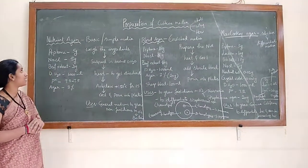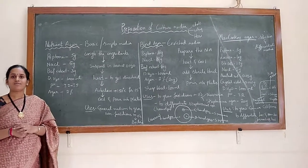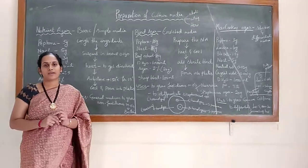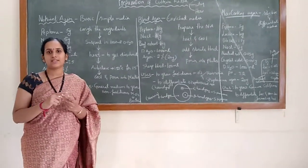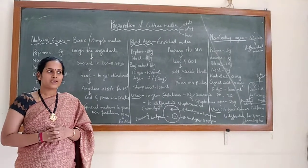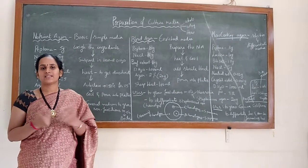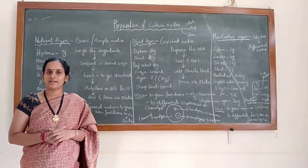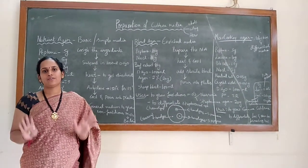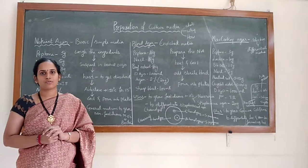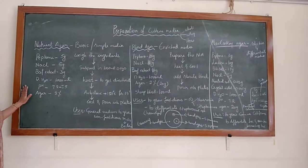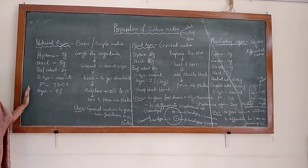Nutrient agar medium is used to grow non-fastidious bacteria. Non-fastidious bacteria are those which do not require any specific nutrients in the culture medium — they grow comfortably when supplied with the basic nutrients required for growth. Nutrient agar is a basic or simple medium used for non-fastidious microorganisms.